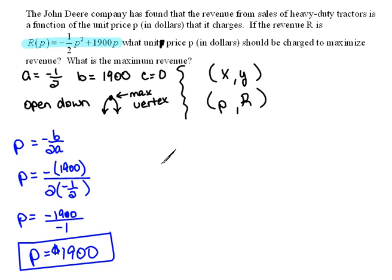Now we can use that to find the maximum revenue, because revenue will equal negative 1 half times the price, which we found to be 1900 squared, plus 1900 times the price, which we said was 1900.